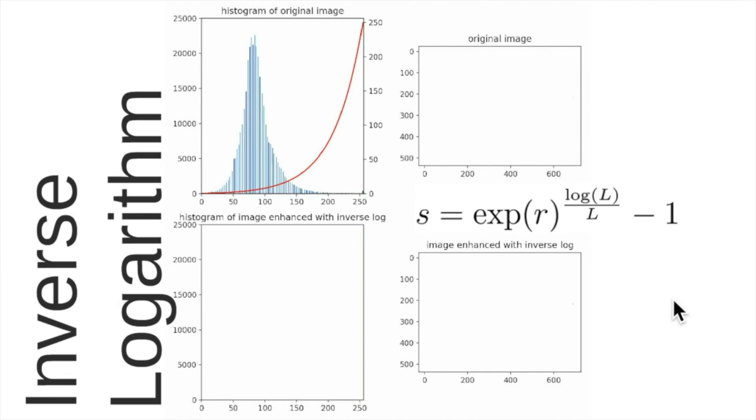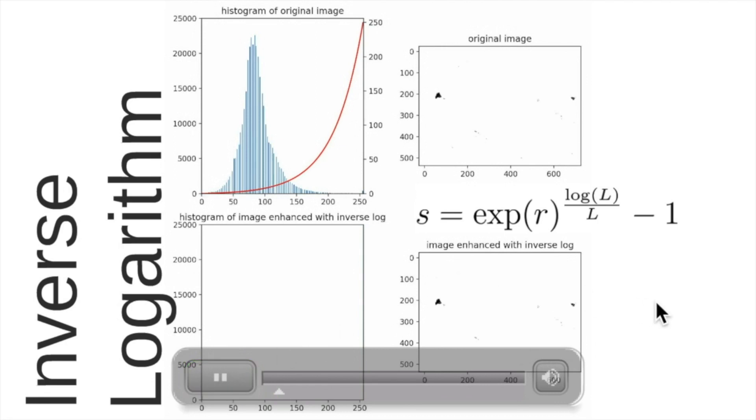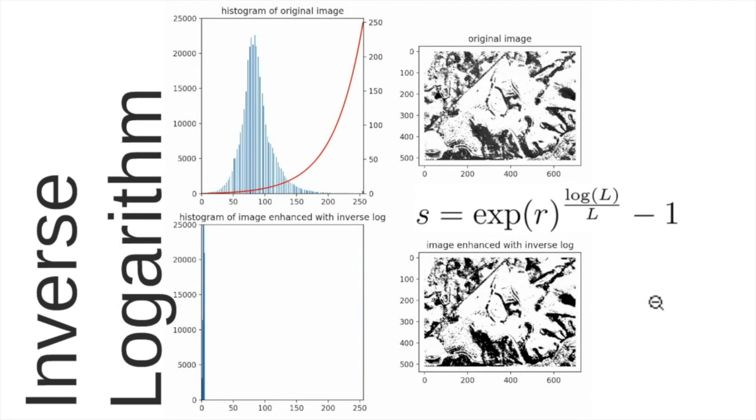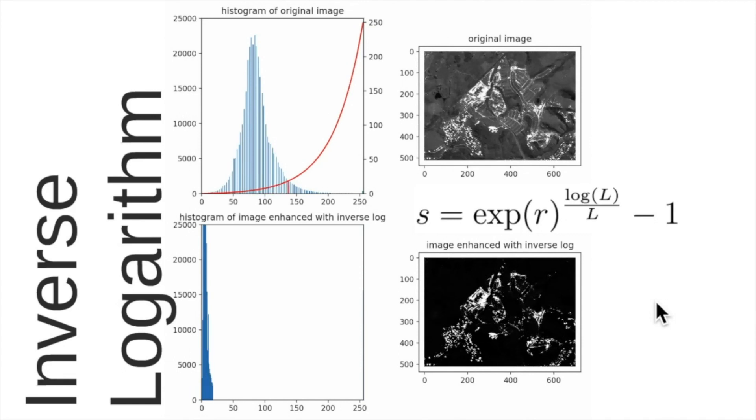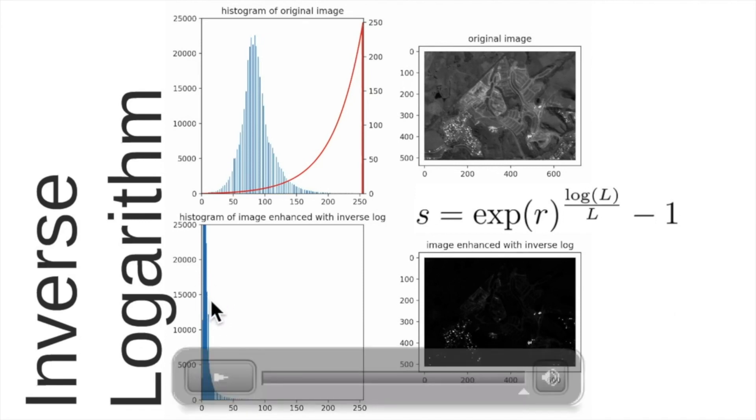We have the inverse logarithm which is similar to the previous one. The equation is here but in this case we have even more this effect of a very small gain in the darker parts of the image and a very big gain in the brightest part of the image. We can see the result here which will produce a very dark image. However, the brightest pixels will have more contrast since this image contains more darker pixels and they became concentrated in the first part of the histogram.